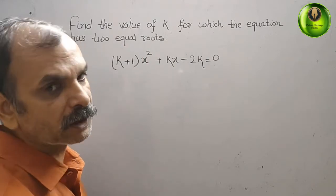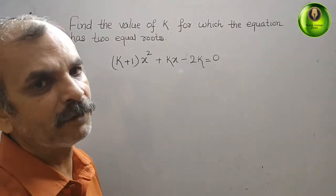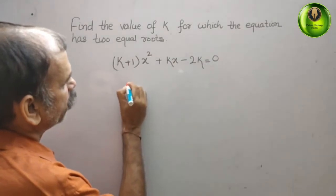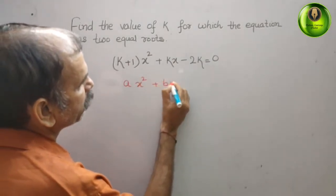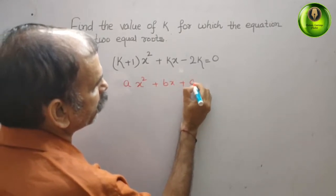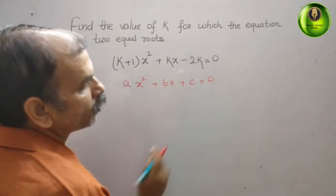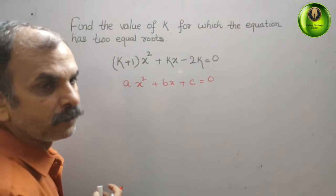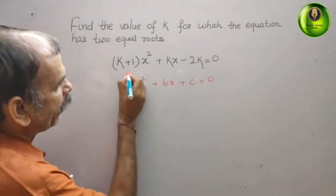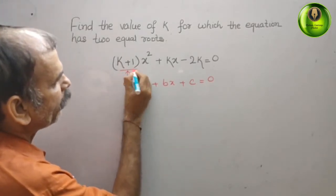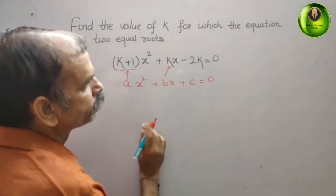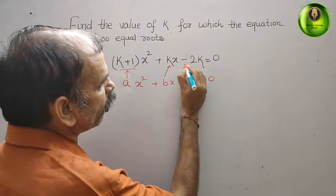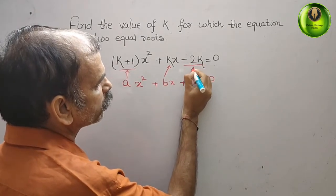So what is our standard quadratic equation that we will write? That is ax² + bx + c = 0. Now just compare it. You will get a = k+1, b = k, and c = -2k.